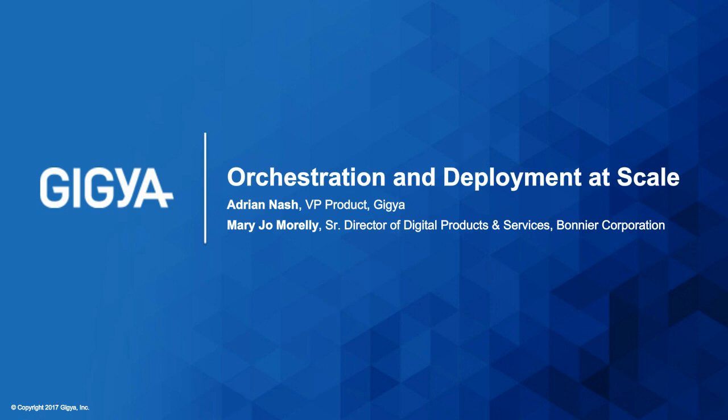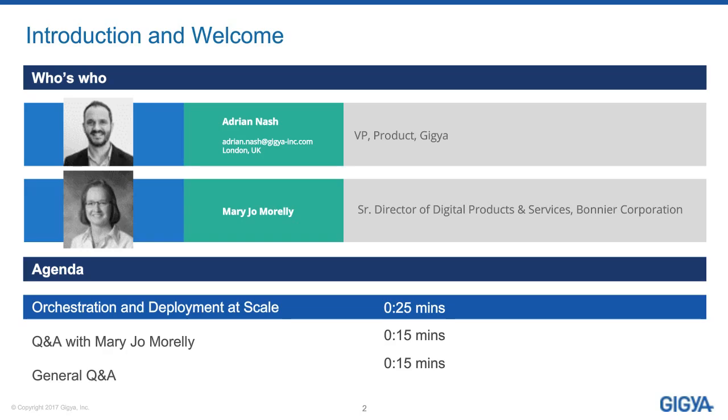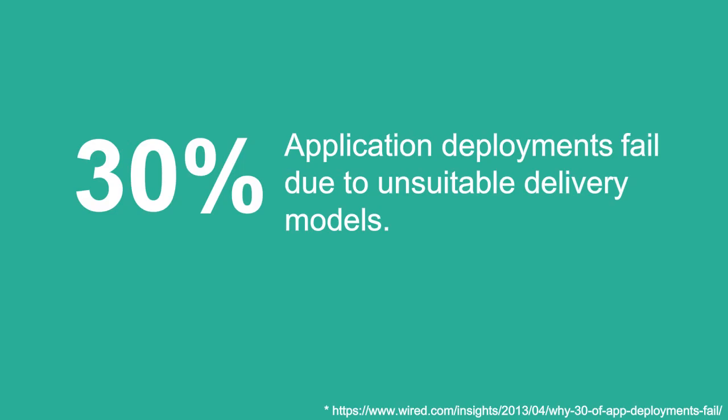Thank you, and welcome everyone to today's webinar. One of the reasons we're talking today is a recent study on why 30% of application deployments fail due to unsuitable delivery models — that's talking about failed delivery models of deploying technical solutions, as opposed to optimizing and making the best use of those resources and deployment projects.